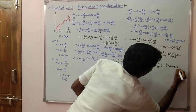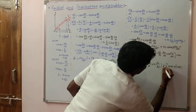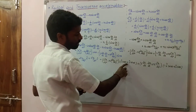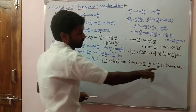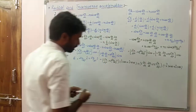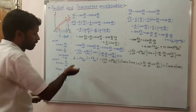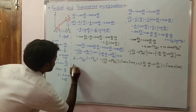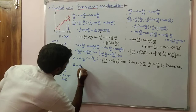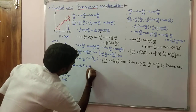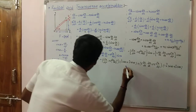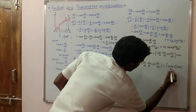In the last class, I already explained that r̂ can be represented as cos theta î plus sin theta ĵ, and theta-cap represents minus sin theta î plus cos theta ĵ. Now this equation is compared with a-bar equal to a_r into r̂ plus a_theta into theta-cap. Here this is r̂ and this is theta-cap.